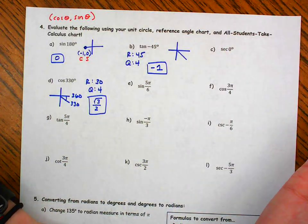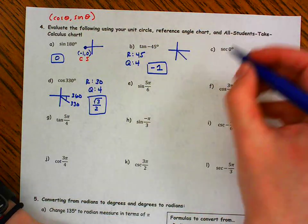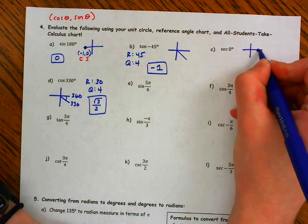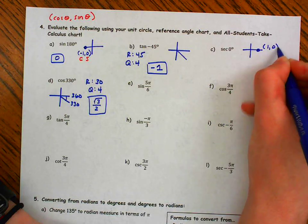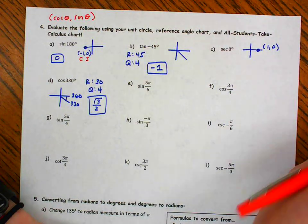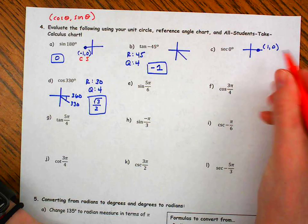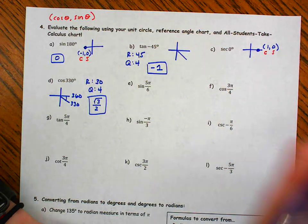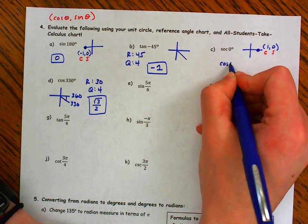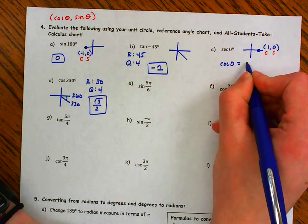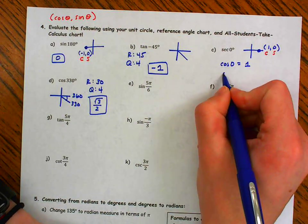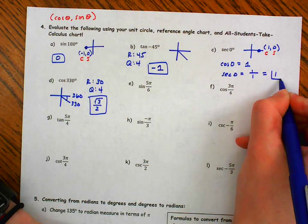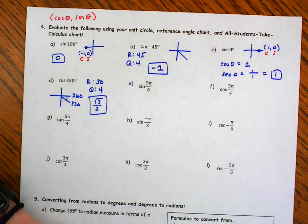I'm going to actually evaluate it for cosine and then take the reciprocal. So this is a quadrantal — it's here, and my coordinate is over 1, positive 1, up or down 0. So this is my cosine, this is my sine. Cosine of 0 is equal to 1. Secant of 0 is just the reciprocal of cosine, so my final answer is 1 divided by 1, which is 1.